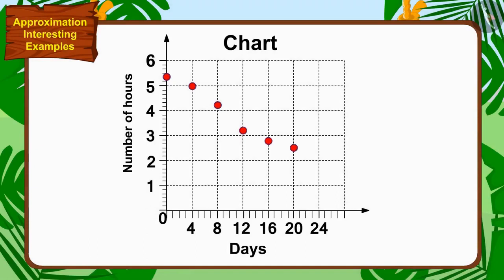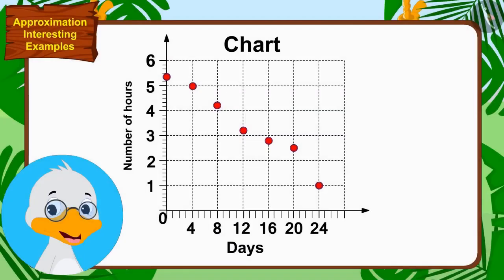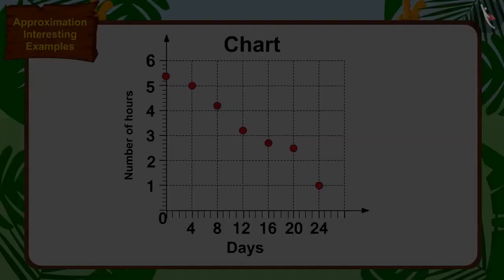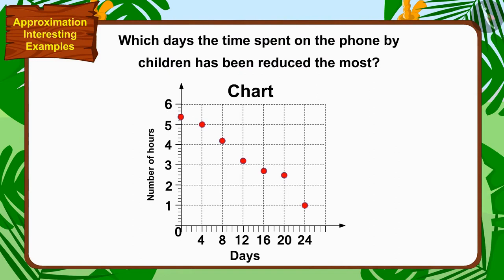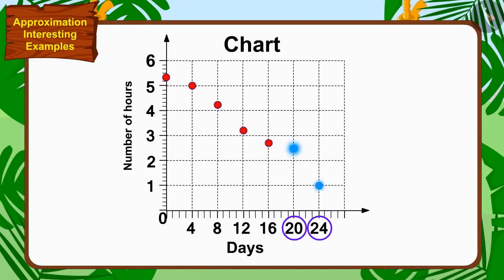Uncle recorded the time spent on the phone by the children for 24 days. Let me look at this chart to find out between which days the time spent on the phone has been cut the most. Children, can you find the answer by looking at this chart? The distance between the heights of the dots of the 20th and 24th days is the highest. Hence, the most time cut on the phone by children was between the 20th and 24th days — a cut of 1 hour and 30 minutes.